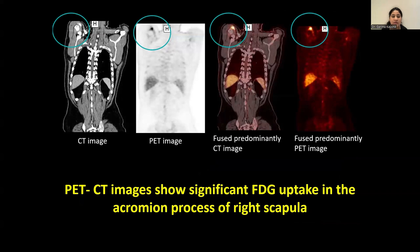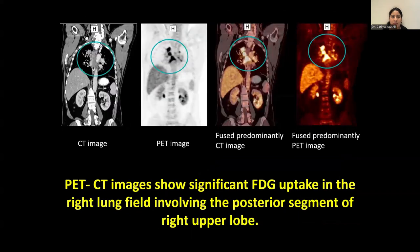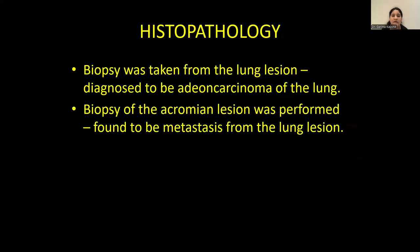Further, PET-CT was advised to the patient, which revealed significant FDG uptake in the acromion process of the right scapula. PET-CT images also showed significant FDG uptake in the right lung field involving the posterior segment of the right upper lobe. Histopathology was then advised; biopsy from the lung lesion came out to be adenocarcinoma of the lung, and biopsy of the acromion lesion was found to be metastasis from the lung lesion.